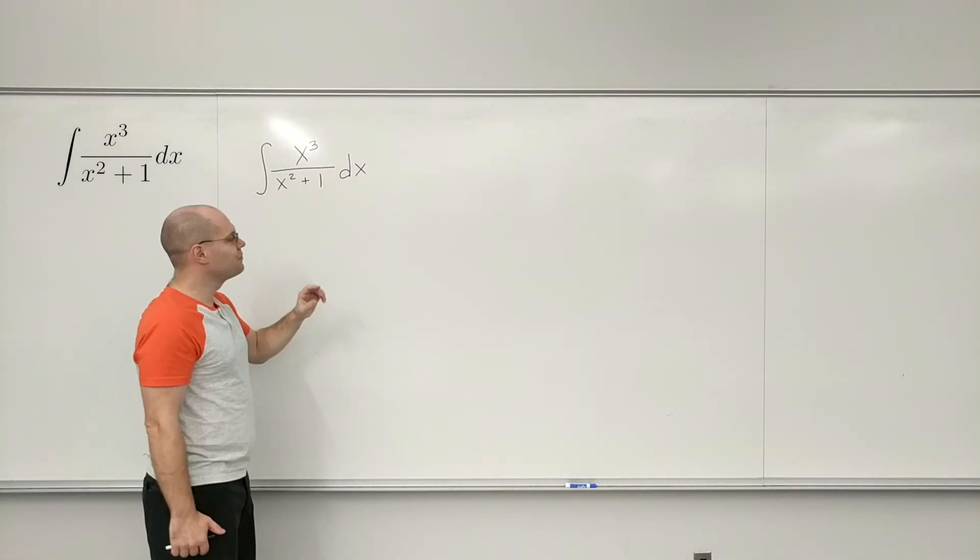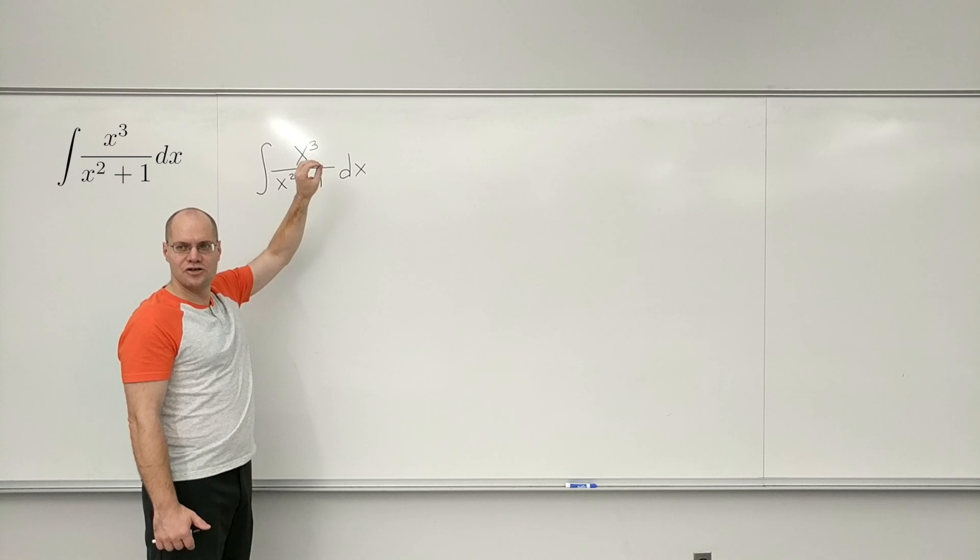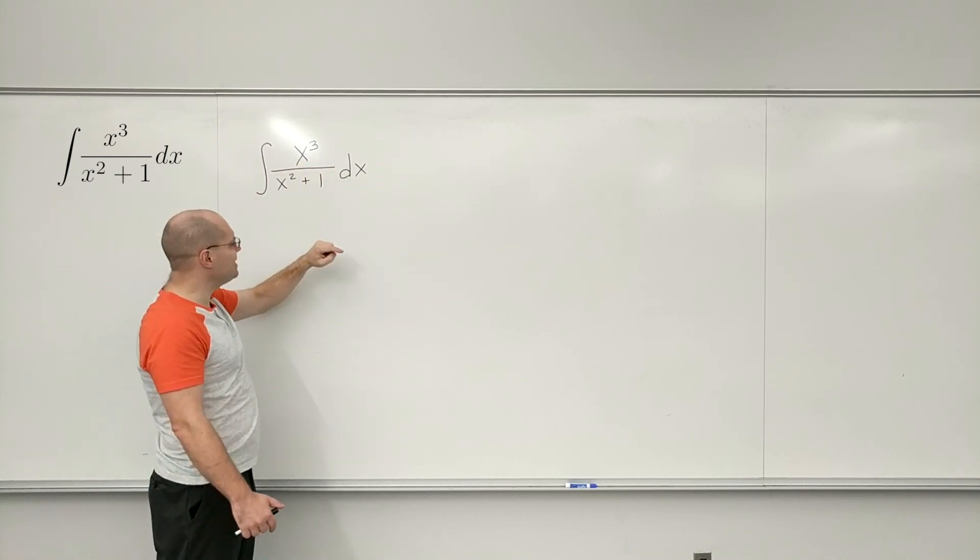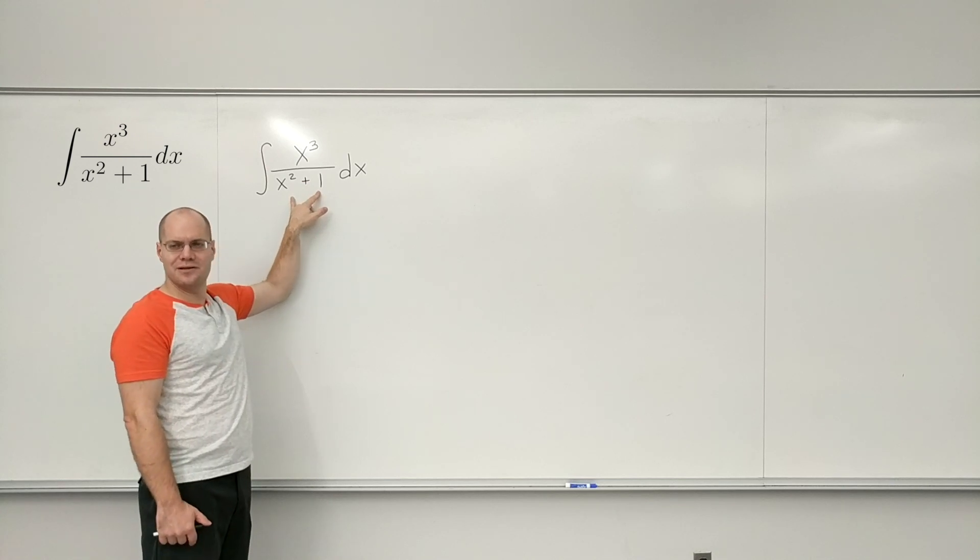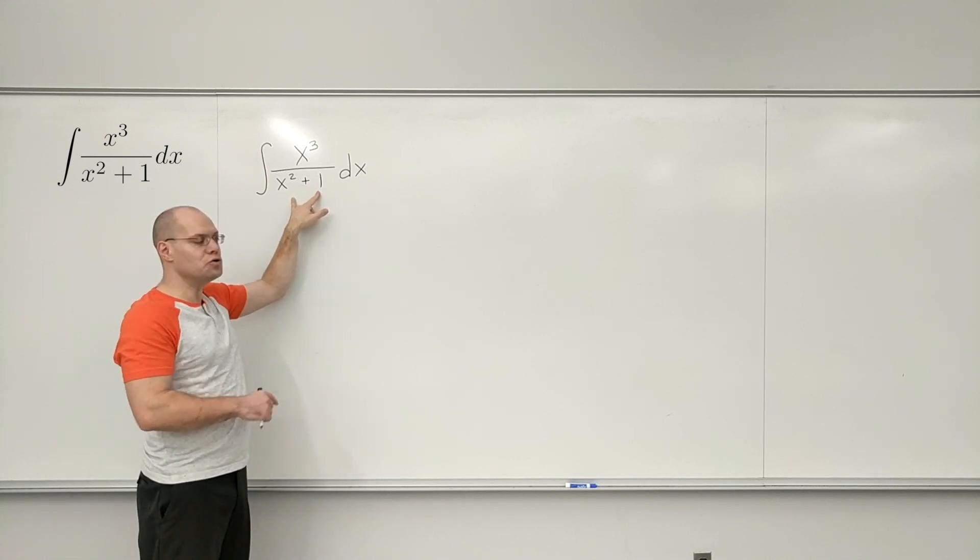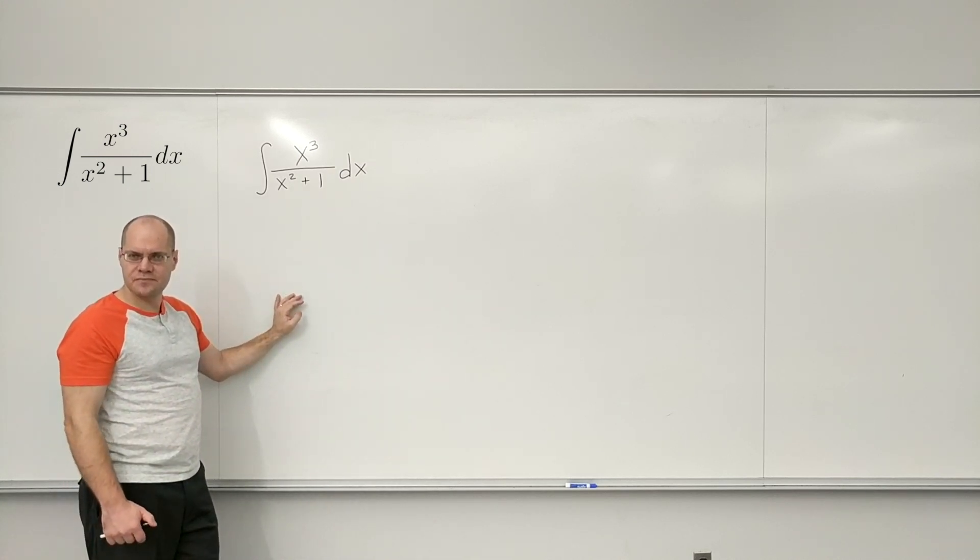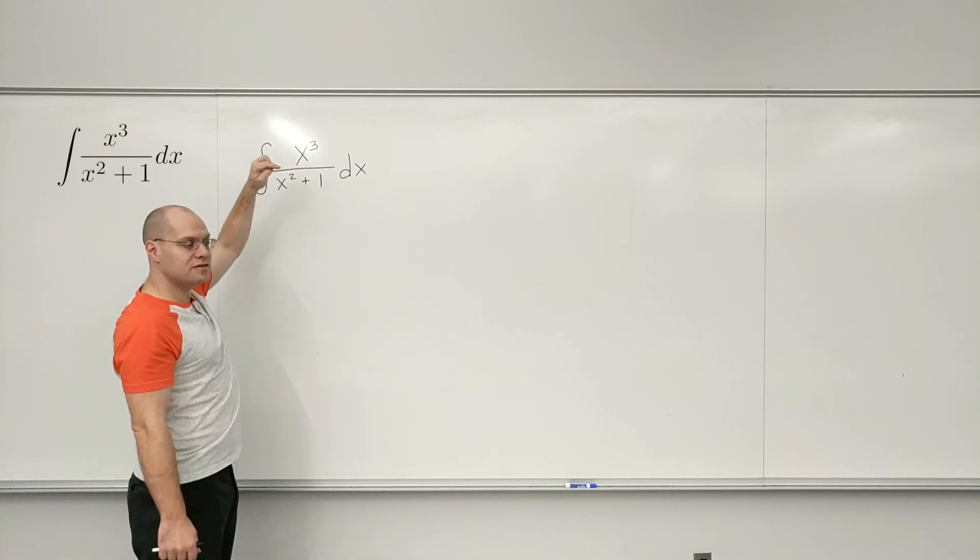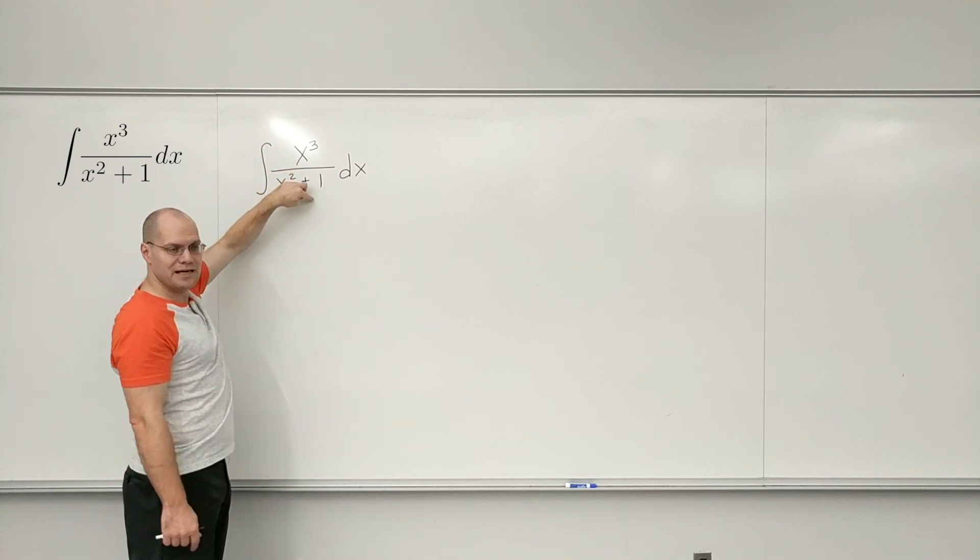The goal is to modify this expression so that the degree of the polynomial in the numerator is less than the degree of the polynomial in the denominator. Once you've achieved that, you can proceed with partial fractions. But in order to achieve that, you have to carry out the long division of this polynomial by this one.